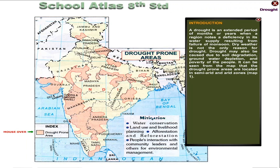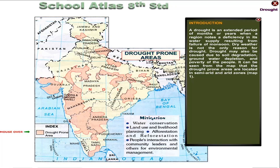Dry weather is not the only reason for drought. Drought may also be caused due to soil degradation, groundwater depletion and poverty of the people. It can be seen from the map that the drought-prone areas are located in semi-arid and arid zones.